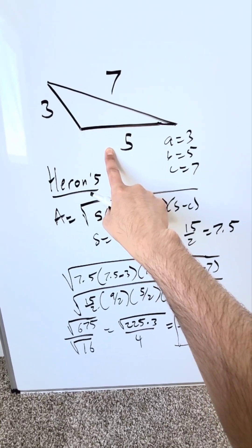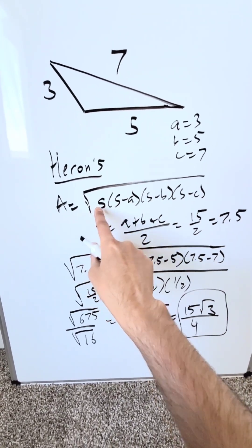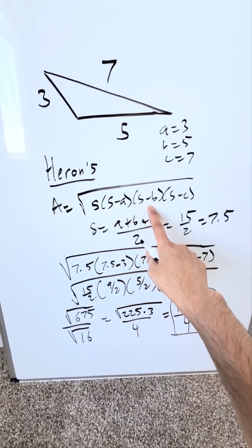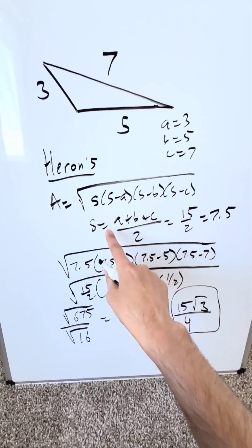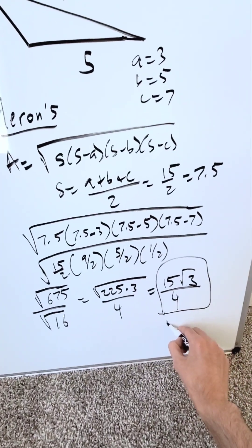Anytime you have this sort of a question where you have the three sides but no angles, use this formula. Square root s times s minus a times s minus b times s minus c where s is equal to the sum of your sides divided by 2 and this answer here will be correct.